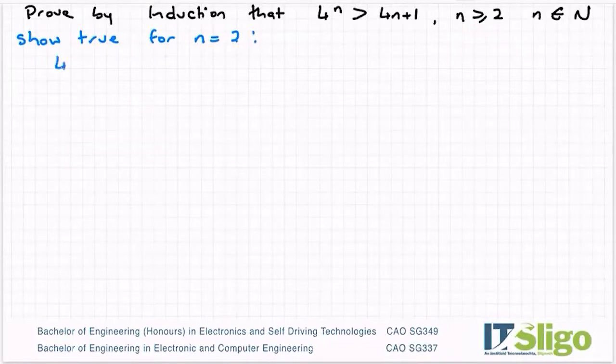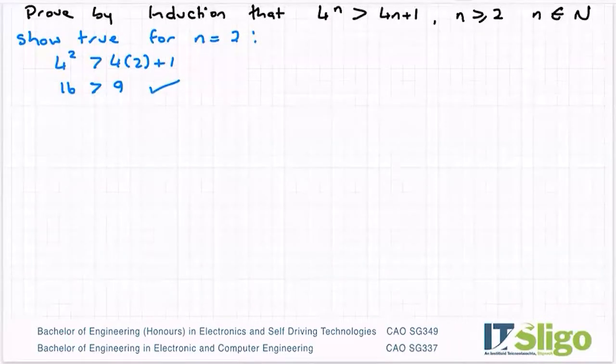Therefore on my left hand side it'll be 4 to the power of 2, and the right hand side will be 4 times 2 plus 1. So I have 16 is greater than 9. So 16 is indeed greater than 9, so it holds true for n equals 2.